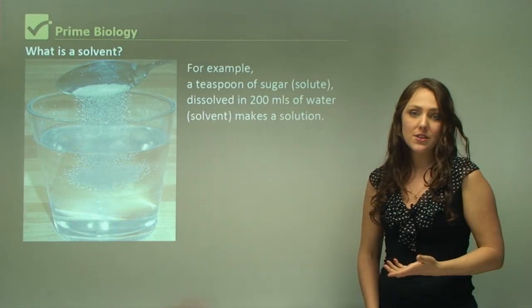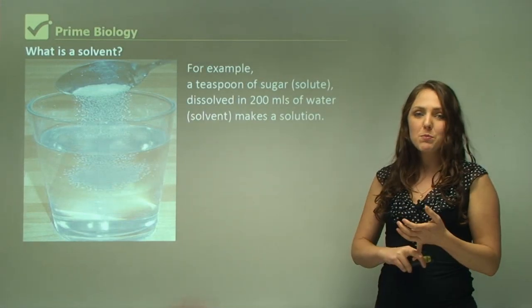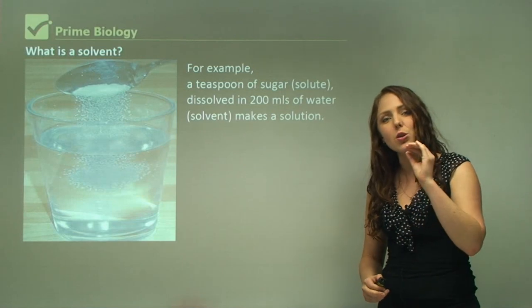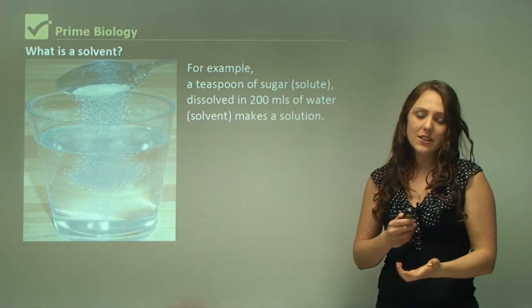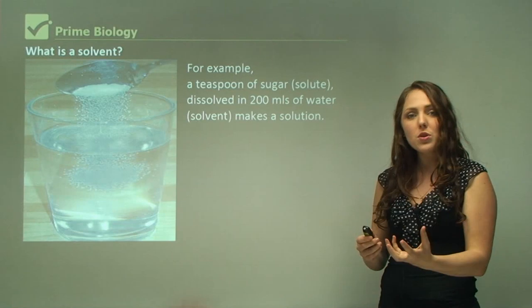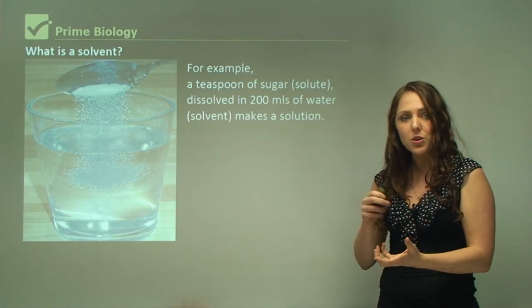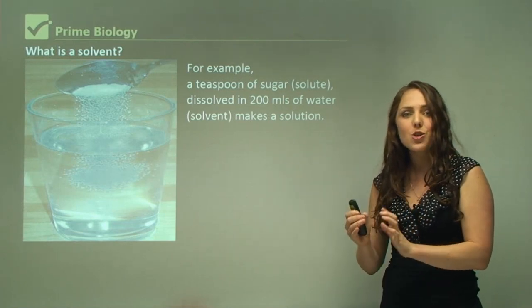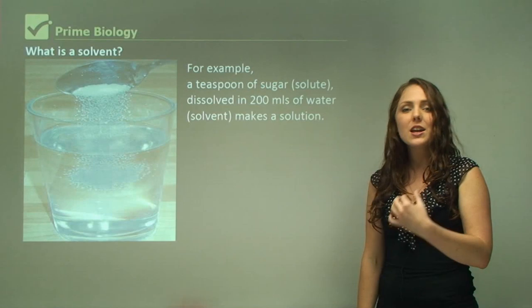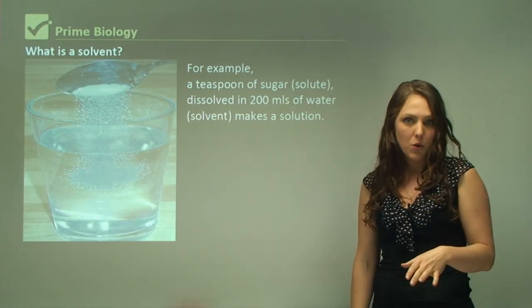A good example which you might do at home is you get a teaspoon of sugar. Now the sugar is the solute and water is the solvent. If you mix it in the water, the water is a solvent, the sugar is a solute, and both together when dissolved becomes the solution.